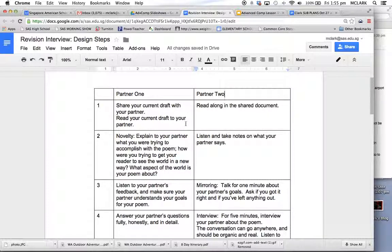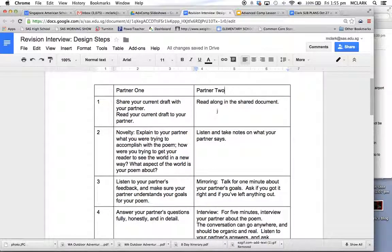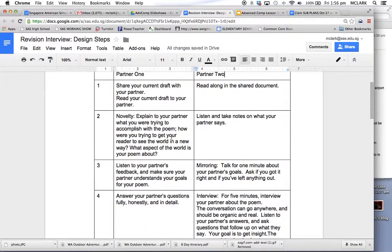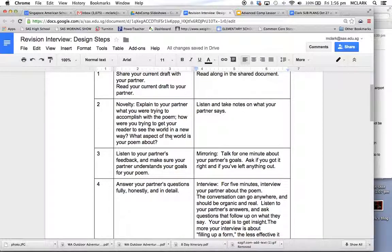And then you're going to read it aloud. Partner two is going to read along in the shared document. So this is how it's going to be different than workshop. The next thing you're going to do is, after you've read your draft, you're going to explain to your partner what you were trying to accomplish with the poem. How were you trying to get your reader to see the world in a new way? You don't have to read the poem, you don't have to choose specific words, you just need to be able to explain to your partner what the poem's about and what you're trying to do with it. Meanwhile, if you are partner two, you listen and take notes on what your partner says.